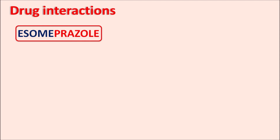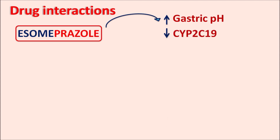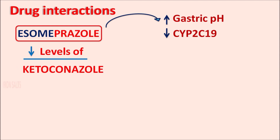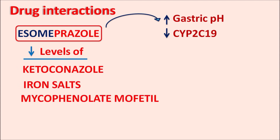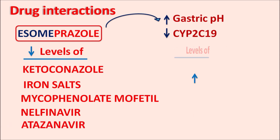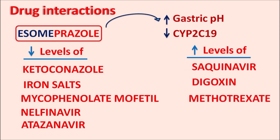There are many other drug interactions with S-omeprazole. These may be related to the increased gastric pH caused by S-omeprazole, resulting in decreased absorption of certain drugs, or to its inhibitory effect on CYP2C19 activity. S-omeprazole can reduce the serum levels of drugs such as ketoconazole, iron salts, and mycophenolate mofetil, as well as nelfinavir and atazanavir. It can also increase the serum levels of saquinavir, digoxin, and methotrexate. Care should be taken when these drugs are combined with S-omeprazole.